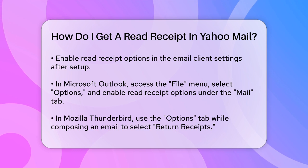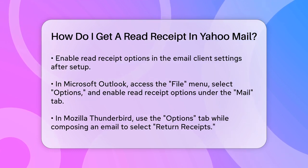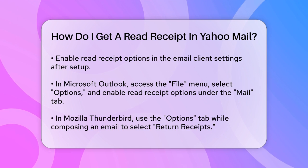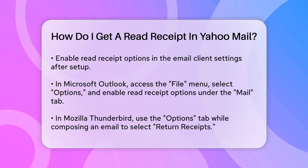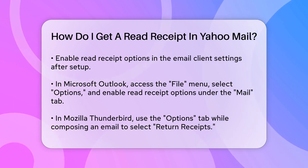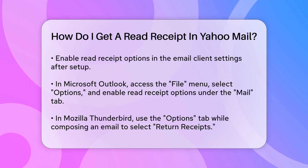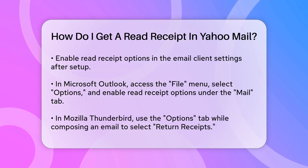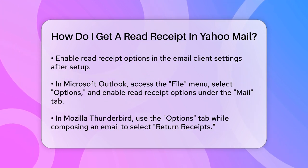To request a read receipt, you'll need to enable this feature in the email client. For instance, in Microsoft Outlook, you can go to the File menu, select Options, then go to the Mail tab, and enable the Delivery Receipt and/or Read Receipt options. In Mozilla Thunderbird, when you're composing an email, you can select the Options tab in the top menu bar and choose Return Receipts or Delivery Status Notification.